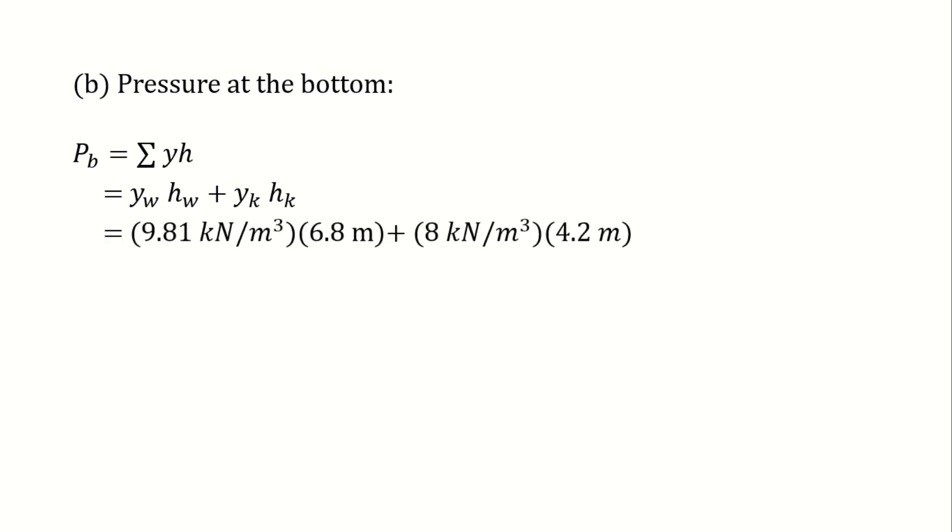So let us substitute the given values. 9.81 kN per cubic meter multiplied by 6.8 m plus 8 kN per cubic meter multiplied by 4.2 m.